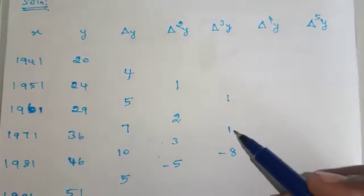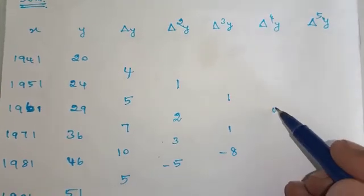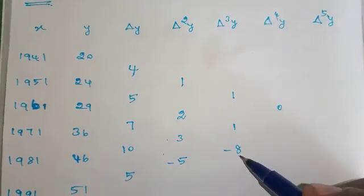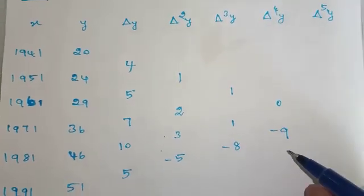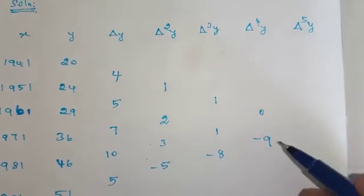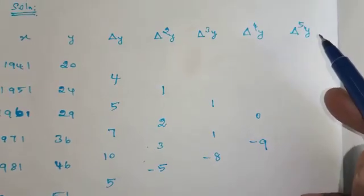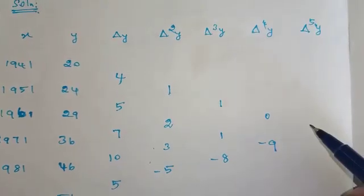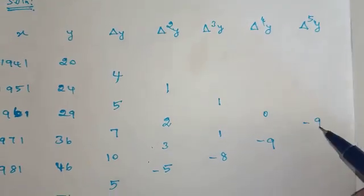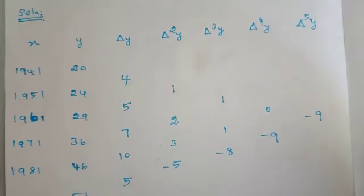Next, Δ⁴y: 1 minus 1 = 0; minus 8 minus 1 = minus 9. Next, Δ⁵y: minus 9 minus 0 = minus 9.